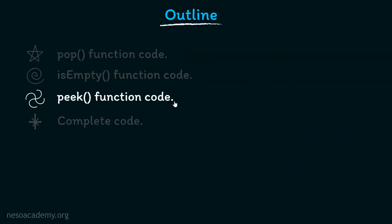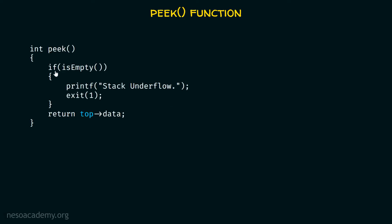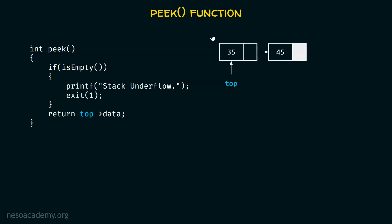Now we are done with isEmpty function code. Let's move on to the peak function code. The peak function simply returns the topmost element of the stack. Here is how the peak function looks like: we first check if stack is empty — then stack underflow and exit. Otherwise, return top->data. For example, if top pointer is pointing to a node with data 35, then top->data is 35, which is the topmost element, and the peak function returns this value back to the caller.